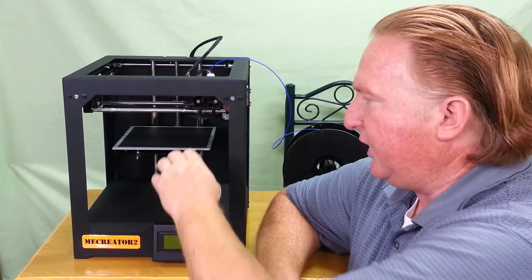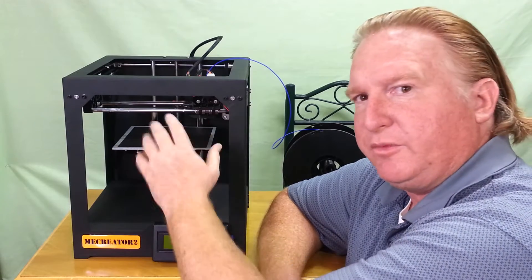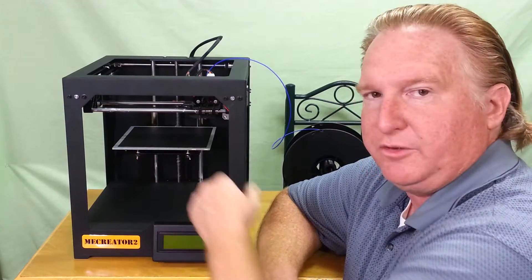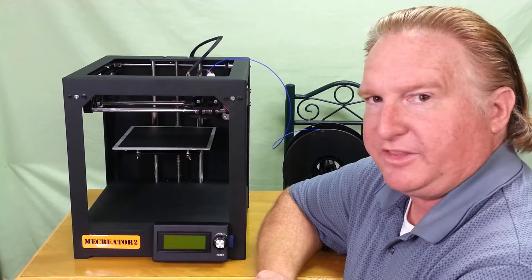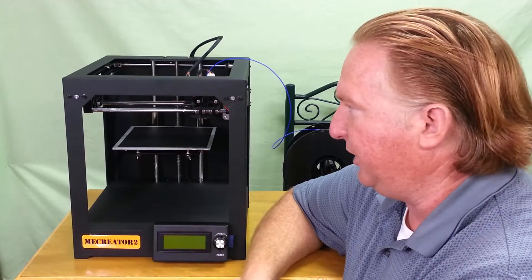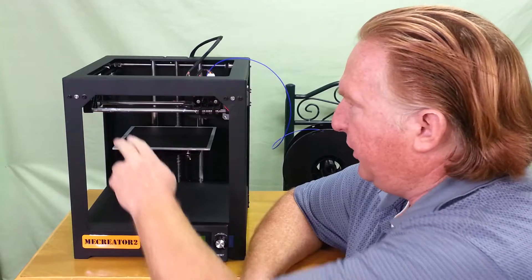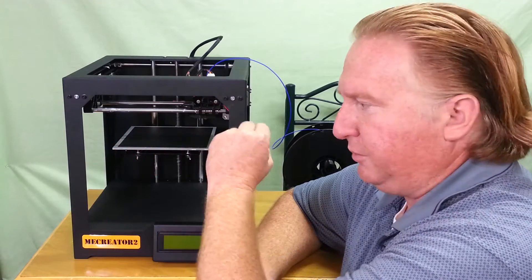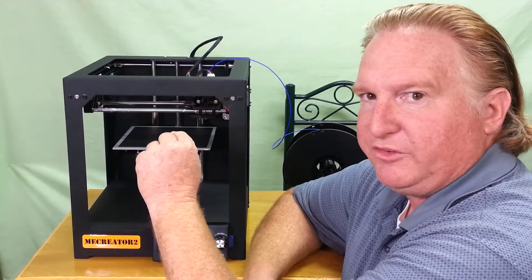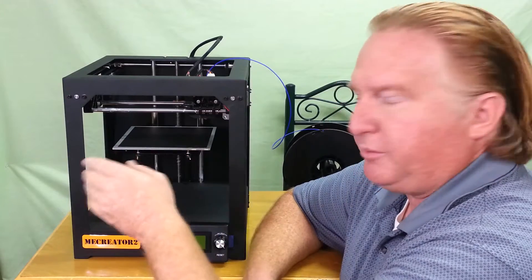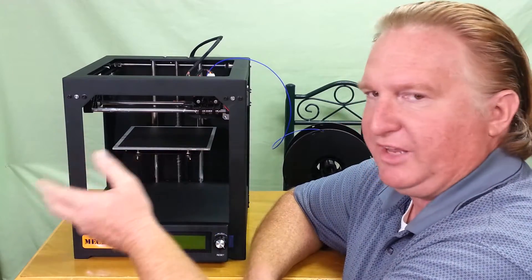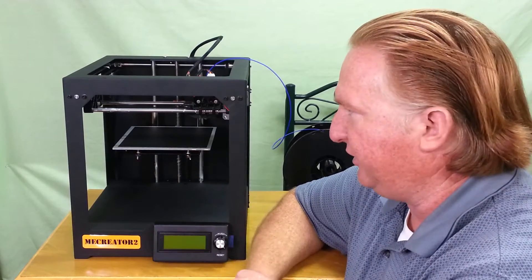Okay guys, so I have the BuildTac on the build plate, somewhat centered as good as I could do it by eye. I went ahead and lubricated all the rods. I have just a light film of the white lithium grease on it, and then I wiped off all the excess. There's no use in having it where it's just dripping off.